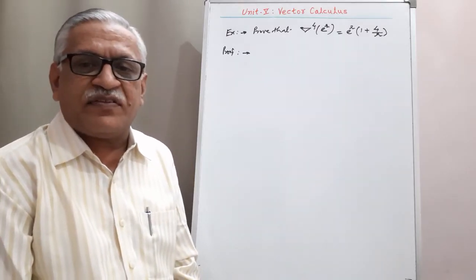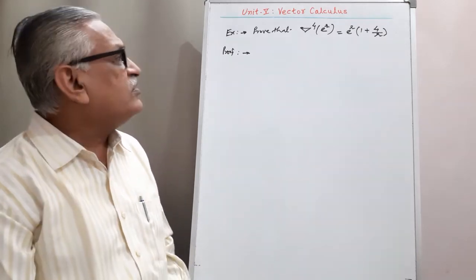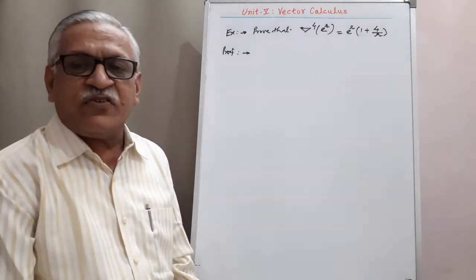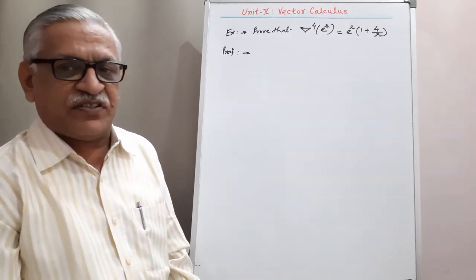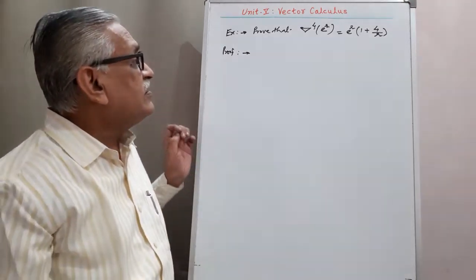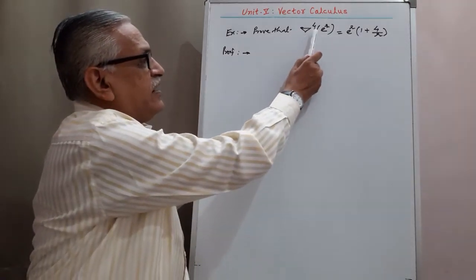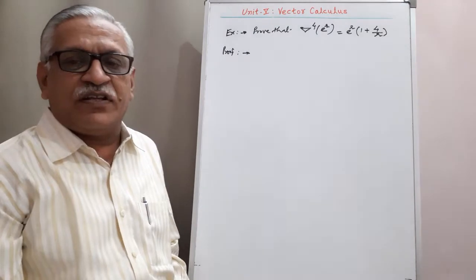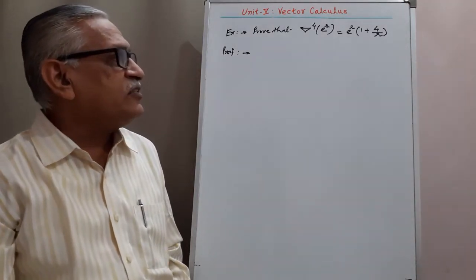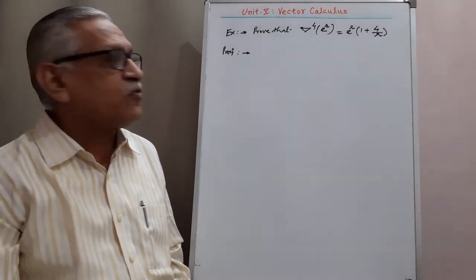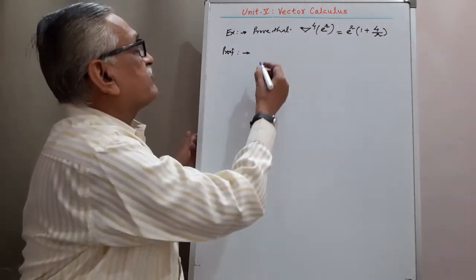Hello friends. I am presenting my next video on del applied twice on point function. We need to prove that del raised to 4 of e raised to r equals e raised to r into 1 plus 4 by r, and therefore to prove this,